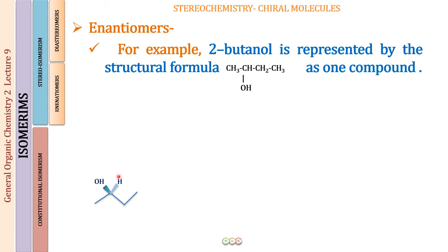In the wedge-and-dash representation, ordinary-looking lines represent atoms in the same plane — the methyl group, the ethyl group, and the central carbon are all in one plane. The OH group comes outside the plane toward you, represented by a solid wedge triangle. The hydrogen goes back behind the plane of the paper, represented by a dash. I will also show this with the help of models now.